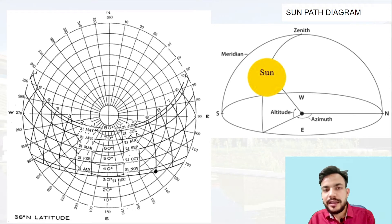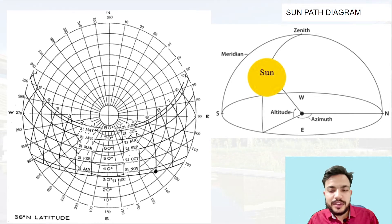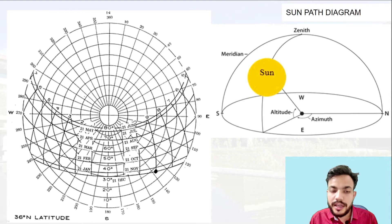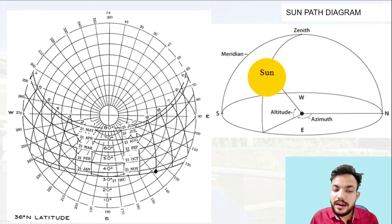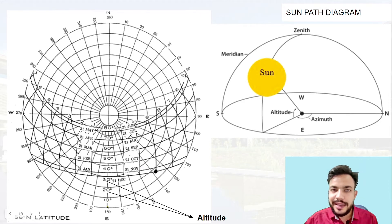Before understanding this, if you look at the sun path diagram directly, it looks very complex and very difficult. But now that you have understood azimuth and altitude, it becomes very easy. Have a look at the left side of the screen — this particular diagram is a sun path chart. You can see there are a number of elements in this sun path chart. The concentric rings you see are representing the angle of altitude.